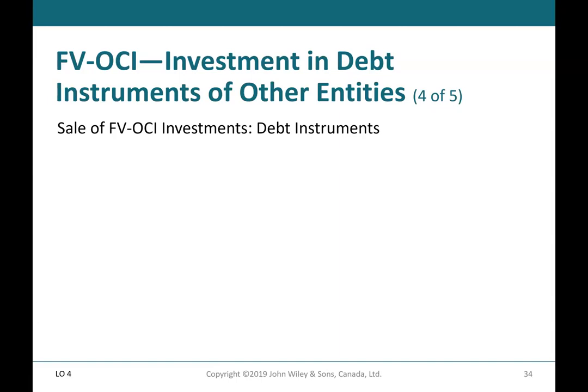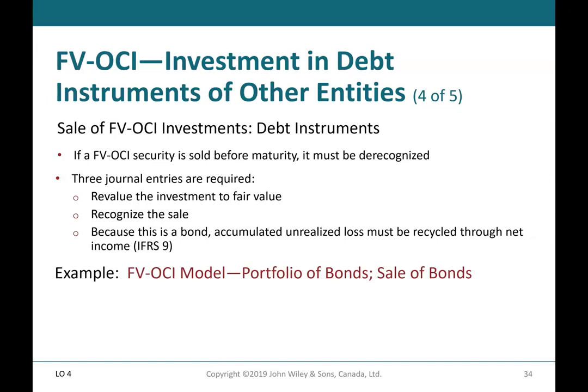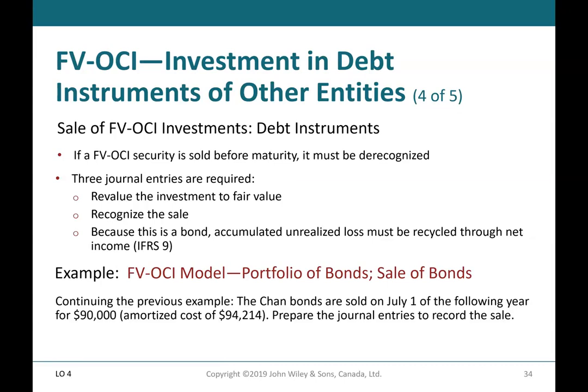FV-OCI — investment in debt instruments, Part 4 of 5. Sale of FV-OCI investments — debt instruments. If a FV-OCI security is sold before maturity, it must be de-recognized, requiring three journal entries: revalue the investment to fair value; recognize the sale; and because this is a bond, recycle the accumulated unrealized loss through net income (IFRS 9). Continuing the previous example: the Chan bonds are sold on July 1st of the following year for $90,000, with amortized cost of $94,214. Prepare the journal entries to record the sale.